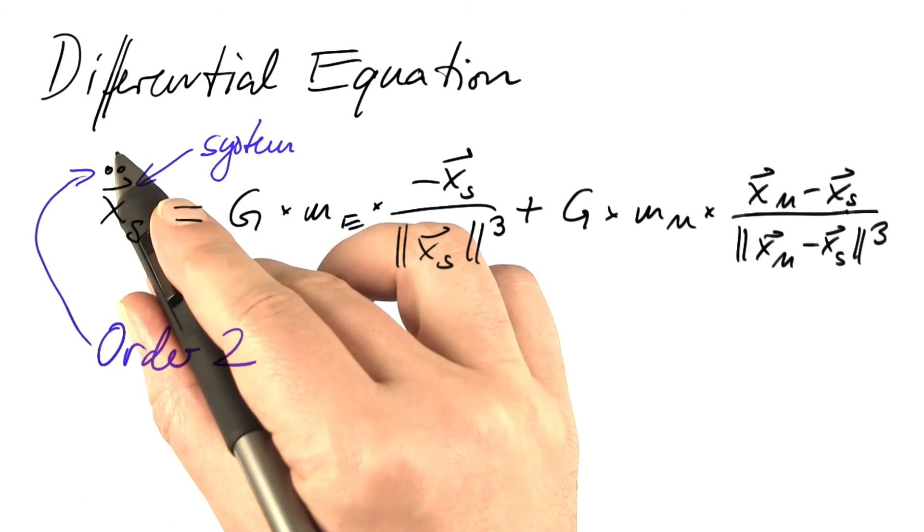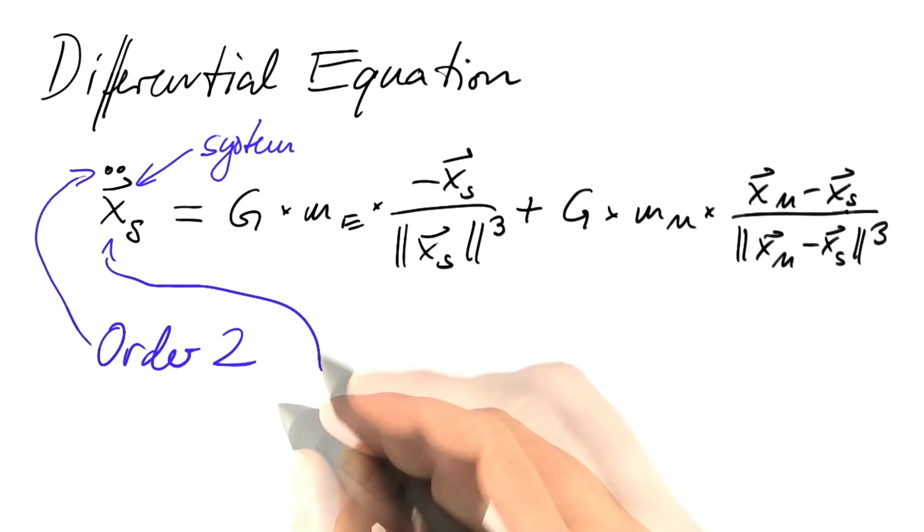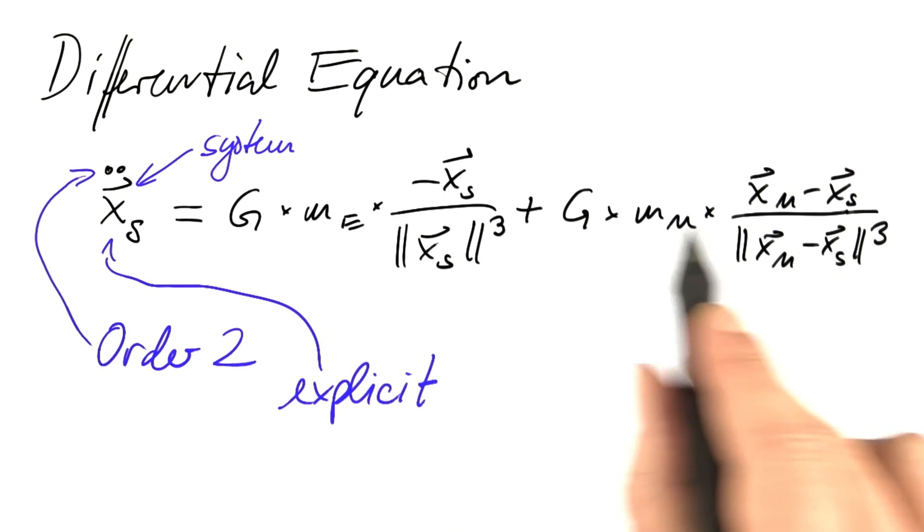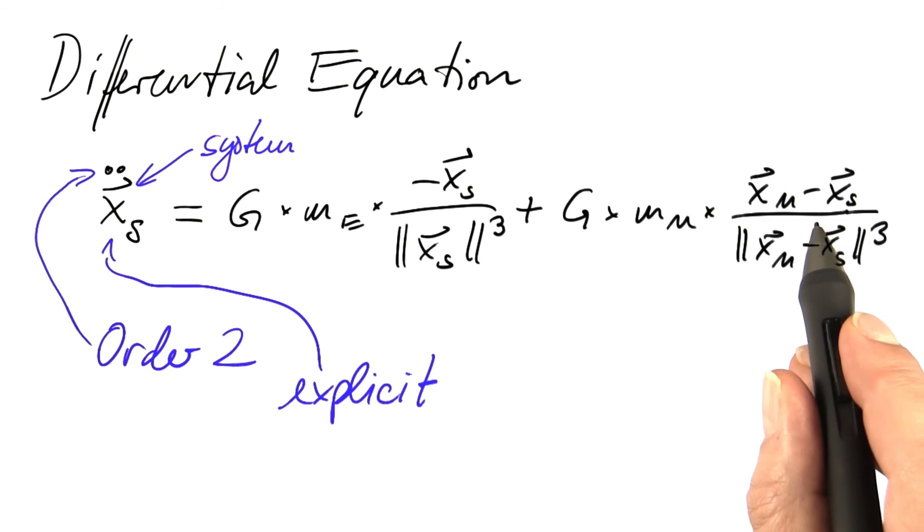The highest derivative stands alone on one side and does not occur anywhere else. This is what we call explicit. If the highest derivative was hidden somewhere, we would first need to solve that equation, which is ugly.